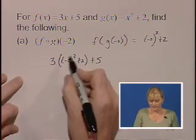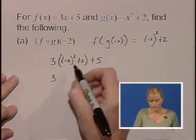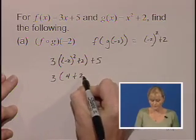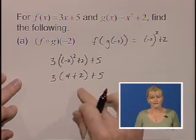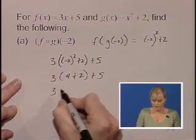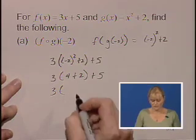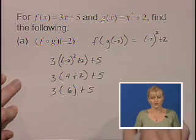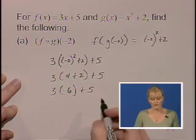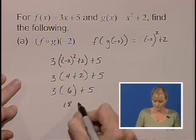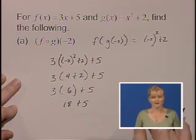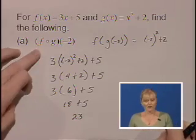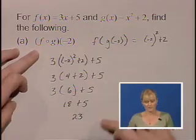We'll continue simplifying. Inside the parenthesis we'll have negative 2 squared, which is 4. Again we'll continue inside the parenthesis: 3 times 4 plus 2 gives us 6. Make sure you follow your correct order of operations and do the multiplication first. 3 times 6 is 18 plus our 5 will result in 23. So F of G at negative 2 is 23.